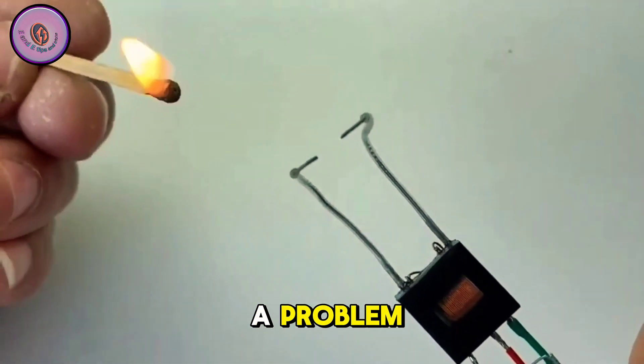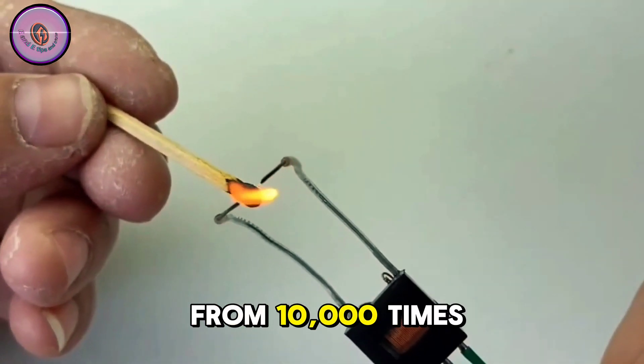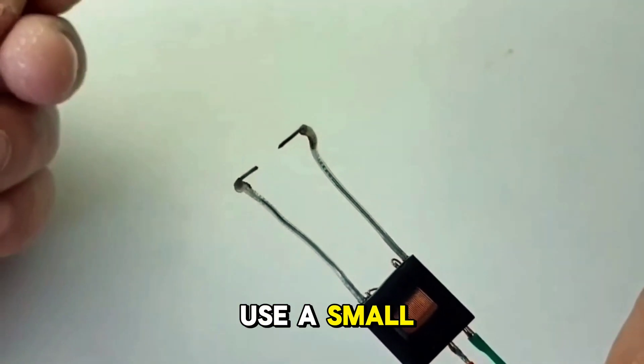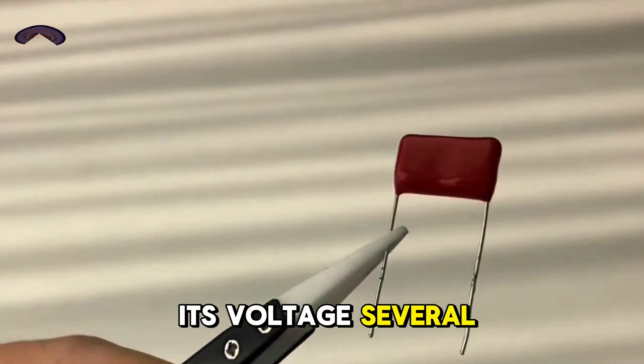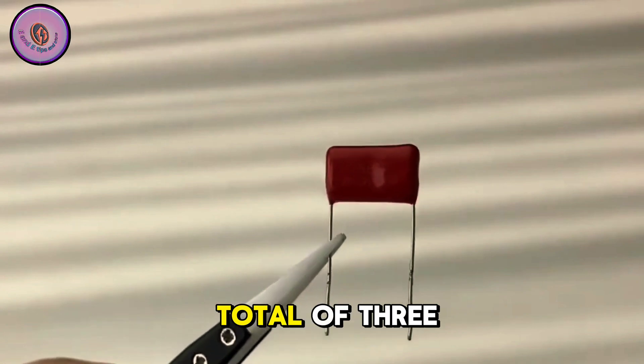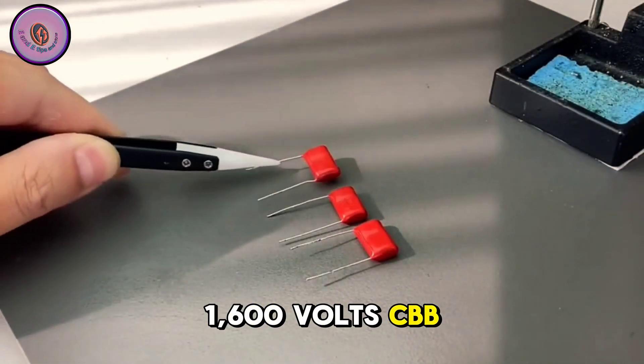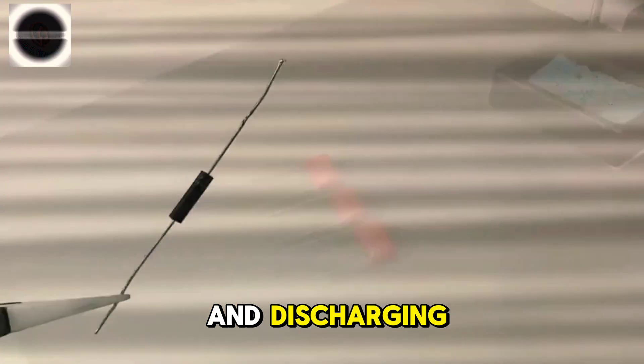The function is the same as that of an arc lighter and the paper towel can be easily ignited. Lighting a match is naturally not a problem, but this arc is still far from 10,000 times the distance. It doesn't matter, then we will use a small device to multiply its voltage several times.